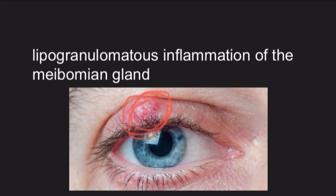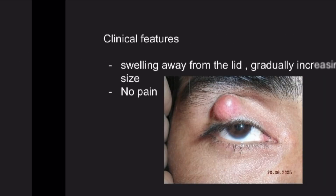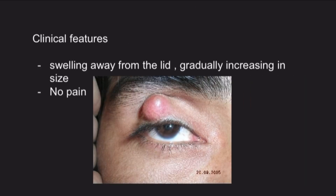Chalazion can occur over the upper lid, as you can see here. It usually occurs in the lower lid also, but most commonly the location is the upper lid.